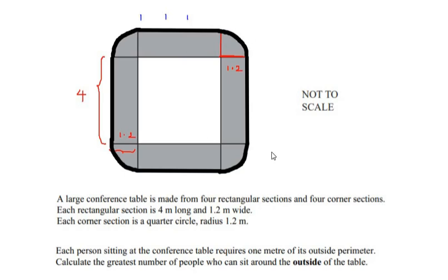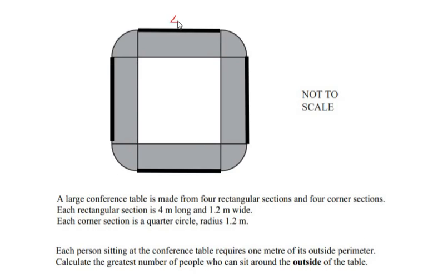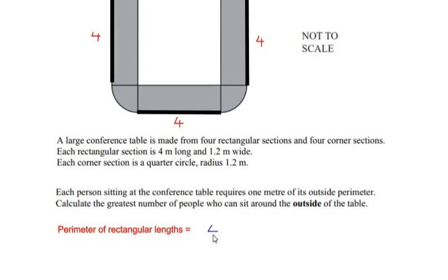We need to find out how many people can sit around the conference table. Starting with the rectangular outer sections: each rectangular section is 4 meters long, so we add all four lengths — 4 + 4 + 4 + 4 — giving a total rectangular perimeter of 16 meters.